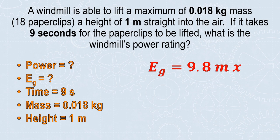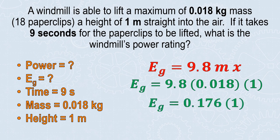I write out my formula so I can substitute in directly below. 9.8 remains 9.8. The mass is 0.018, or about one gram per 18 paper clips. It traveled one meter straight up. Now I'm just going to multiply everything together. It took about 0.176 joules of energy to lift those paper clips up. That means that if the paper clips fell, they would start with a potential energy of 0.176 joules.